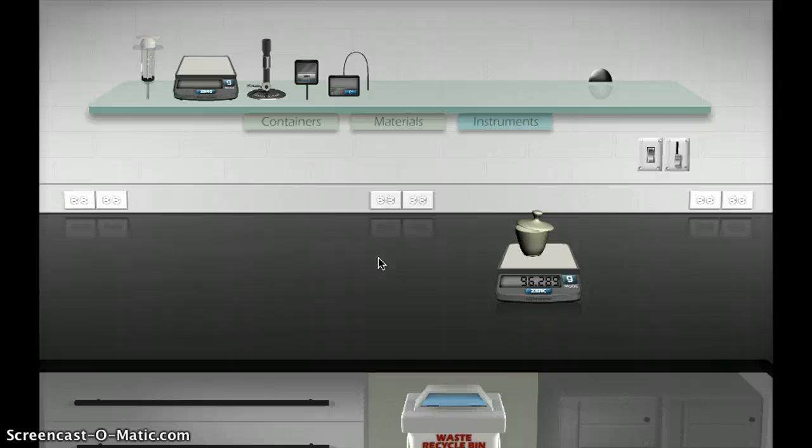The magnesium oxide that's inside the crucible is going to be a little bit more dense than just the magnesium that we had in the crucible before. So now we're going to explore the chemical process by which this reaction occurs.